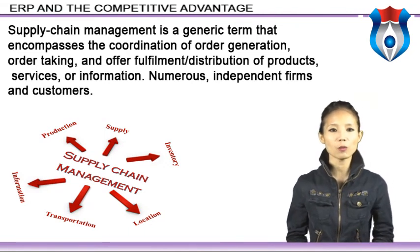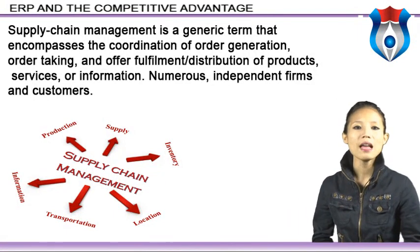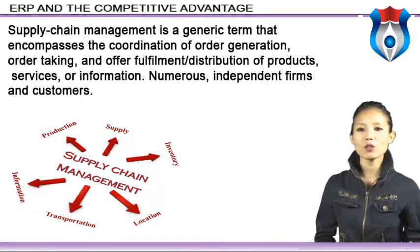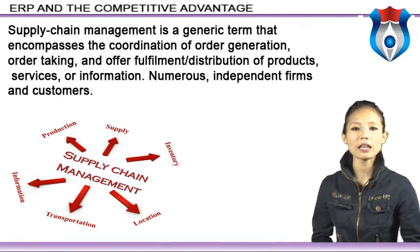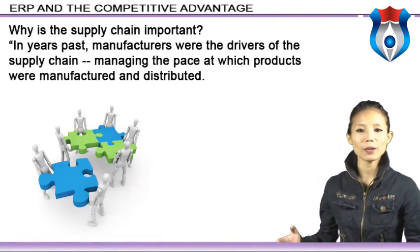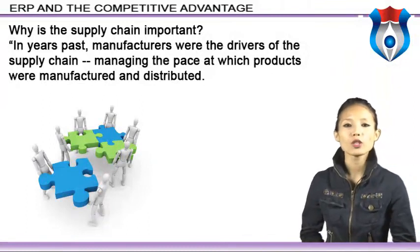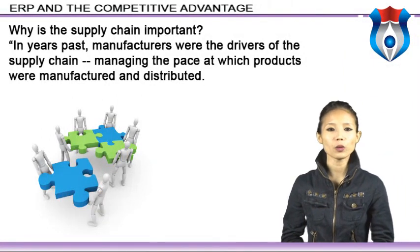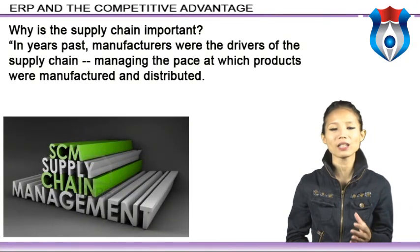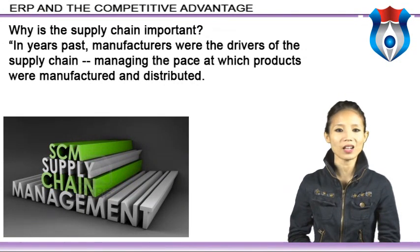Numerous independent firms and customers are involved in a supply chain — manufacturers and parts suppliers, parcel shippers, senders and receivers, wholesalers, and retailers. The WWW and extranets have shown great potential in linking and managing these entities into a virtual organization. In years past, manufacturers were the drivers of the supply chain, managing which products were manufactured and distributed. Today, customers are calling the shots and manufacturers are scrambling to meet customer demands for options, styles, features, quick order fulfillment, and fast delivery.